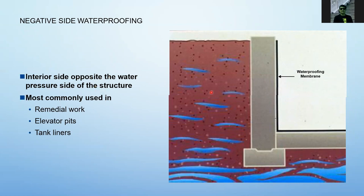Negative side waterproofing can be used on firewalls frequently exposed to weather, or as a remedial measure when there is existing soil on the other side that cannot be excavated — you can put a waterproofing membrane on the negative side. It can also be used on elevator pits, concrete tank liners, and concrete cistern tanks.